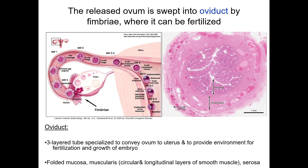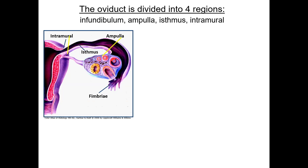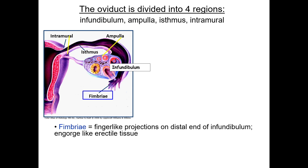The serosa is visceral peritoneum covered in mesothelium. The tube can be divided into four regions. The infundibulum is the most distal funnel-shaped region that opens into the peritoneal cavity. The most distal end has fimbriae, finger-like extensions that function to capture the oocyte, ensuring that most of the time the oocyte is delivered to the uterus.